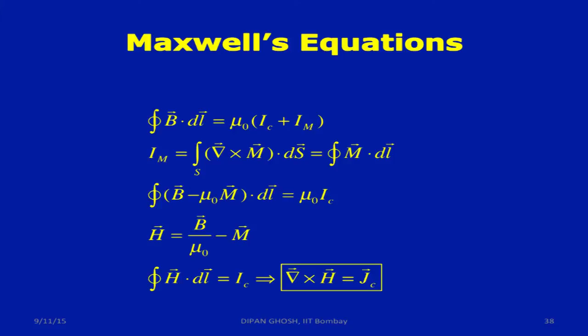My integral B dot dL is simply modified like this. According to this definition which I had, the magnetization current is simply given by del cross M dot dS, which is by Stokes' theorem M dot dL. If you bring this to that side, put in I_M by this way, instead of integral B dot dL being equal to mu_0 I_C, you get some other quantity dot dL equal to mu_0 I_C. You say that, look, what the situation is here is that what happens to be deciding things is not the magnetic field B.